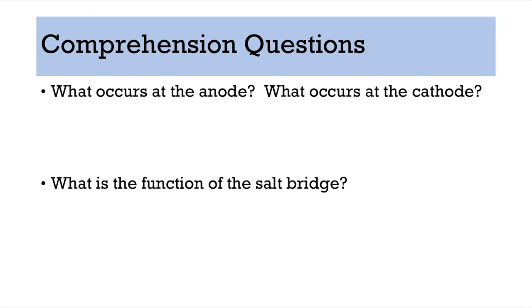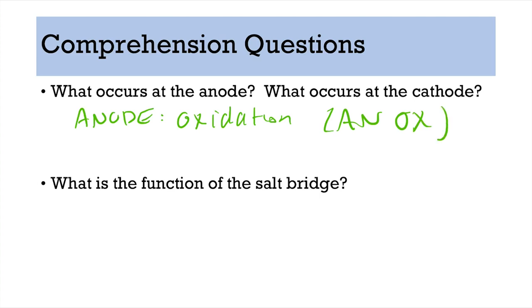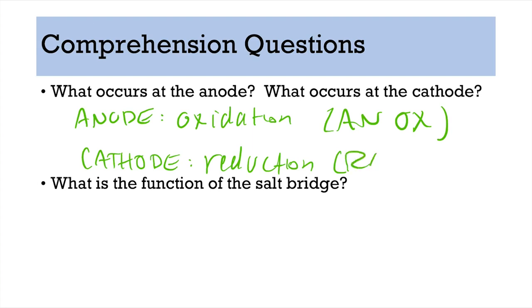At the anode, oxidation happens — that's where n-ox comes into play. The cathode is where reduction happens, and red cat helps you remember that. You can memorize this the traditional way or use these mnemonics to make sense of everything.